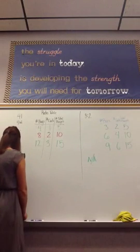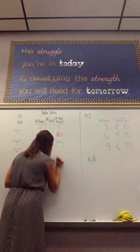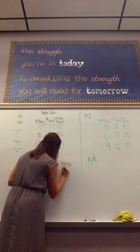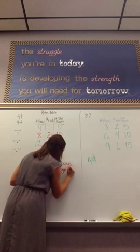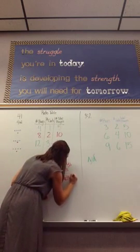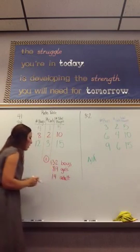So, we could write that, 132 boys, 89 girls, and 14 adults. And this is for problem number one on the homework.